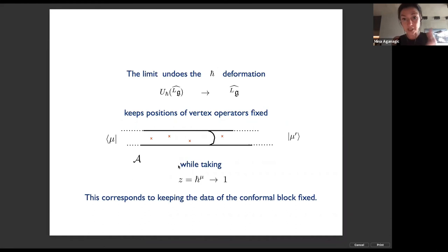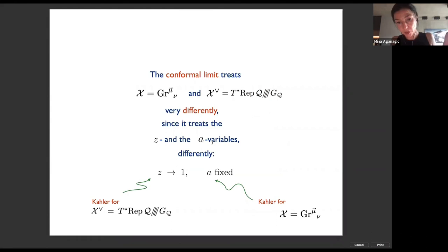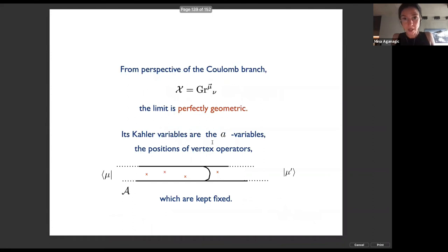The limit undoes the ħ-bar deformation, keeping positions of vertex operators fixed and keeping the weight of the Verma module fixed — those are the two ends kept fixed, which is simply keeping the data of the conformal block fixed. What this does to the three-dimensional theory: it treats the Coulomb branch and Higgs branch very differently. The variables that go to one are Kähler variables for X-check and equivariant parameters for X — the Coulomb branch. The parameters that are fixed are Kähler variables for the Coulomb branch and equivariant parameters for the Higgs branch.